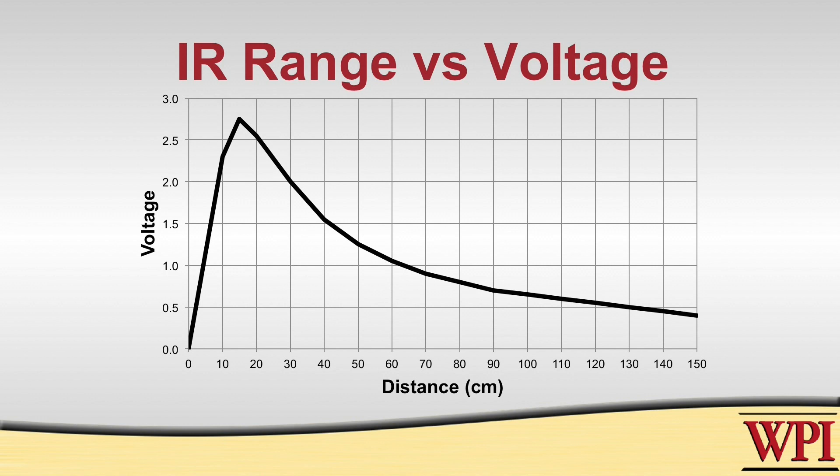One of the major complications with this device is that the output voltage is not a linear function of range. If we look at this graph, we can see that the output voltage is in fact a nonlinear curve. More interestingly, the curve has an interesting behavior at really close ranges. What we see is that the voltage falls off again. So as you get really close, the voltage goes down. At about 15 centimeters, the voltage peaks at around 2.7 volts output. And then as the range continues to grow, the voltage falls off again.